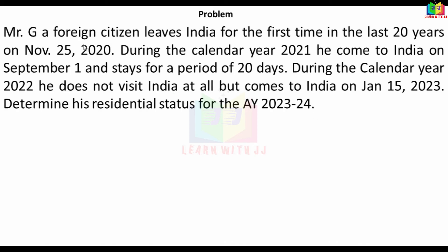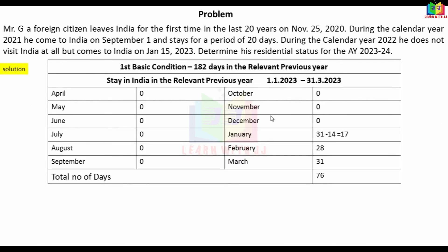The relevant previous year is 1st April 2022 to 31st March 2023. For the first basic condition, he is in India from 15th January to 31st March — that is April through December = 0 days, then January 15th to March 31st = 14 days + 28 days + 31 days = approximately 76 days. 76 days is less than 182 days, so the first basic condition fails.